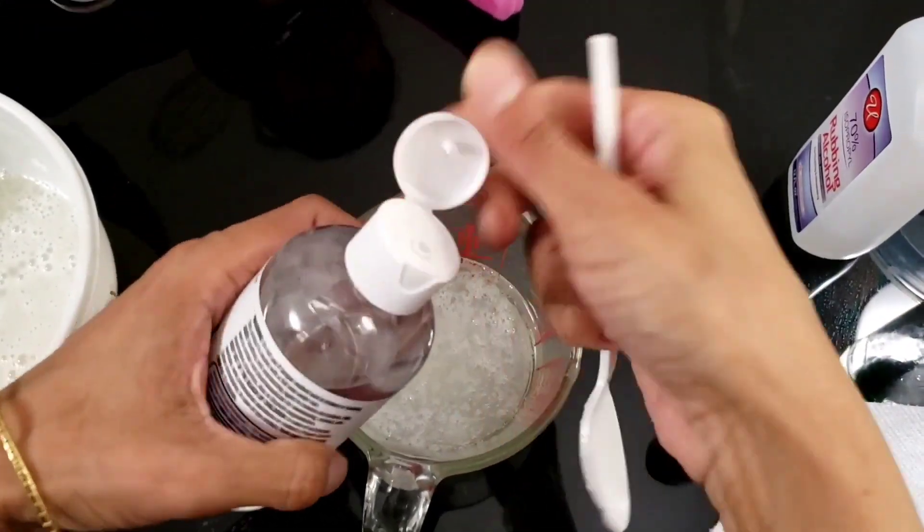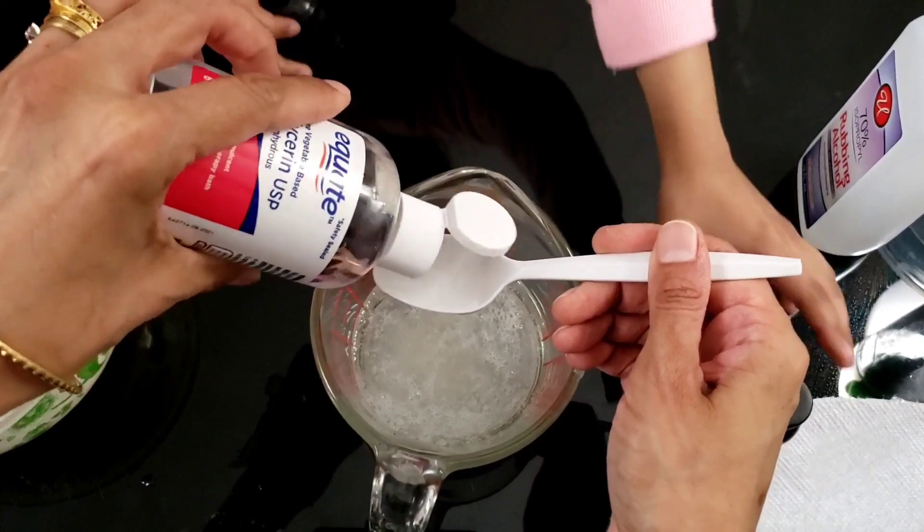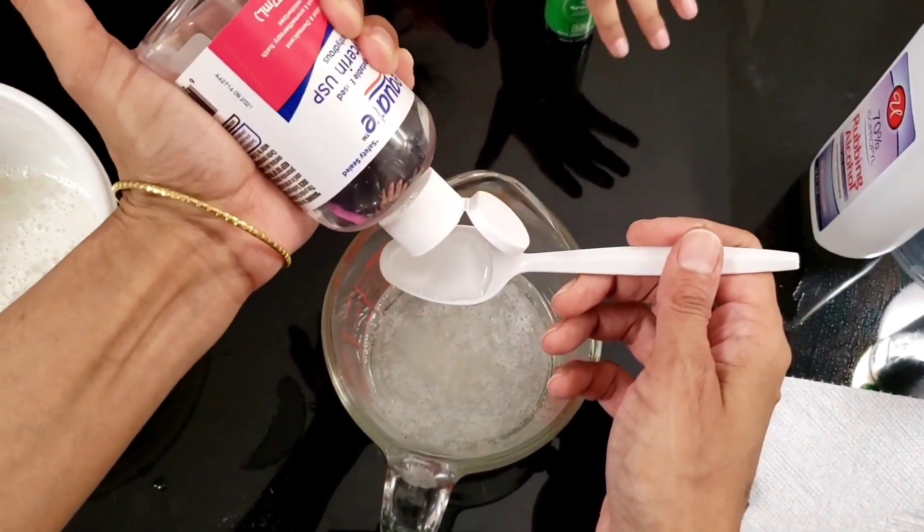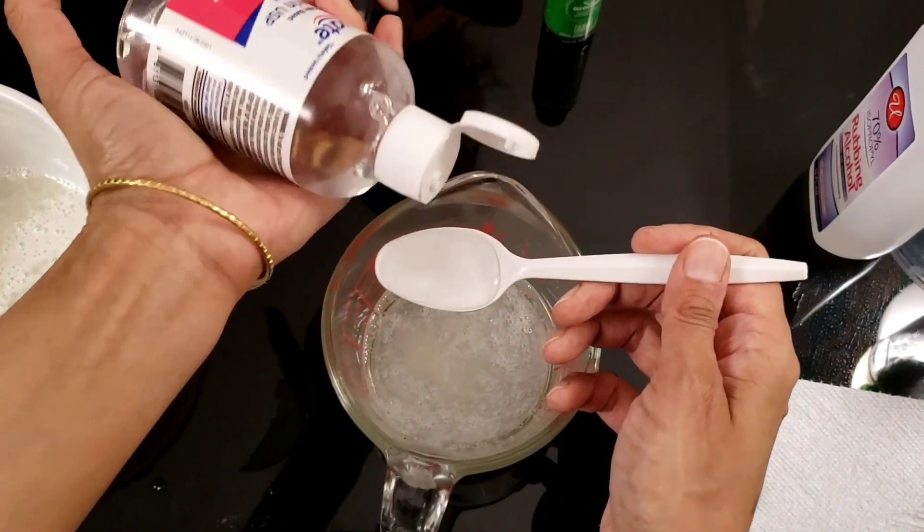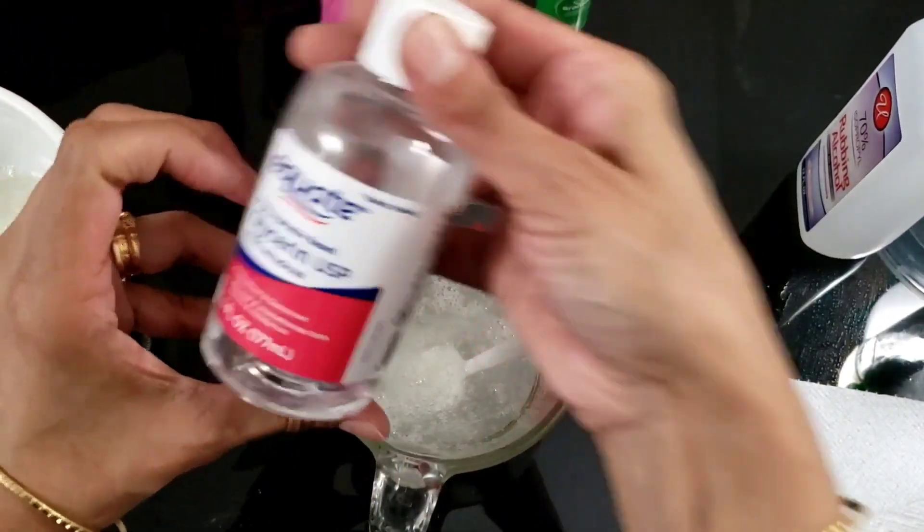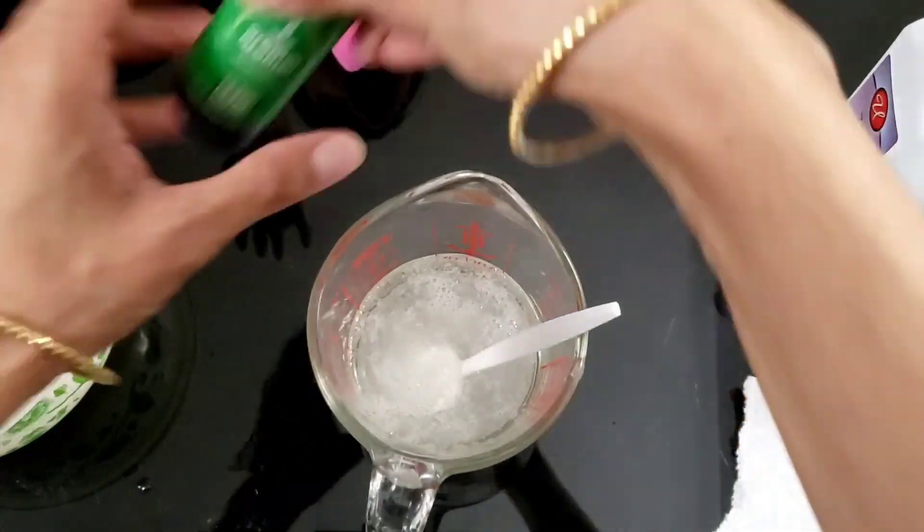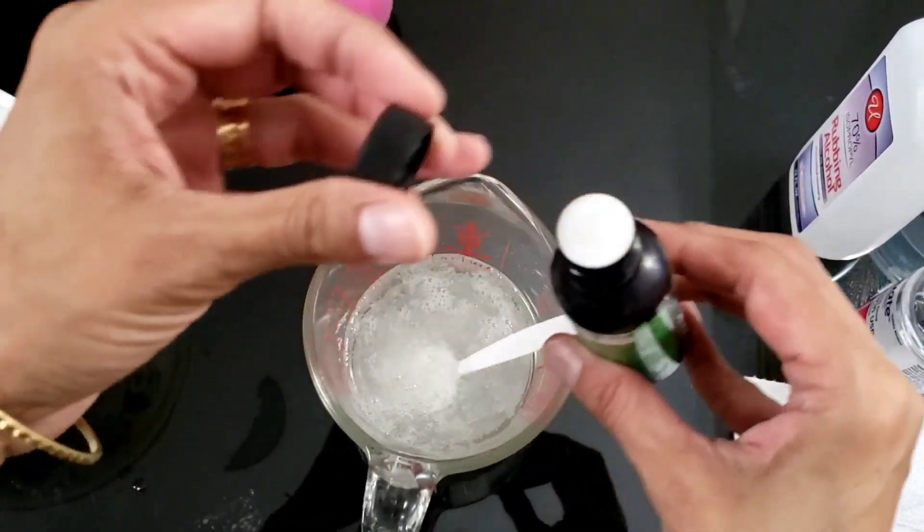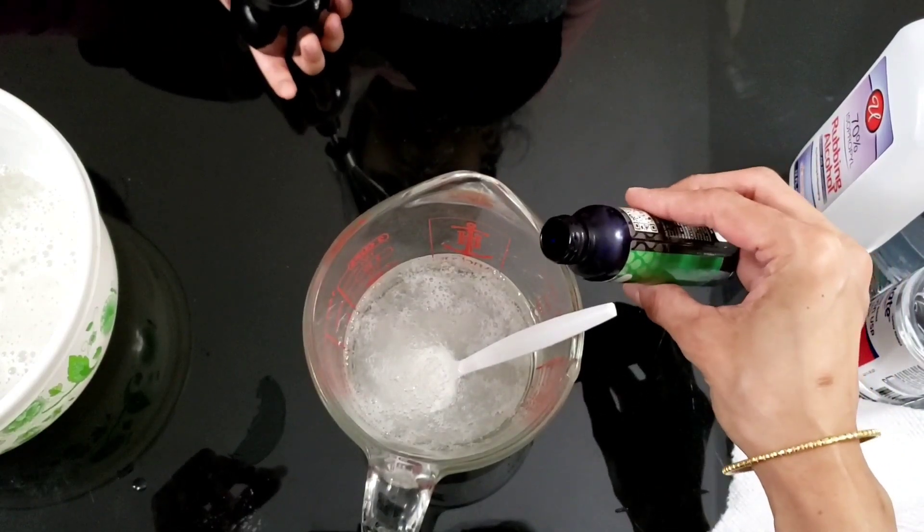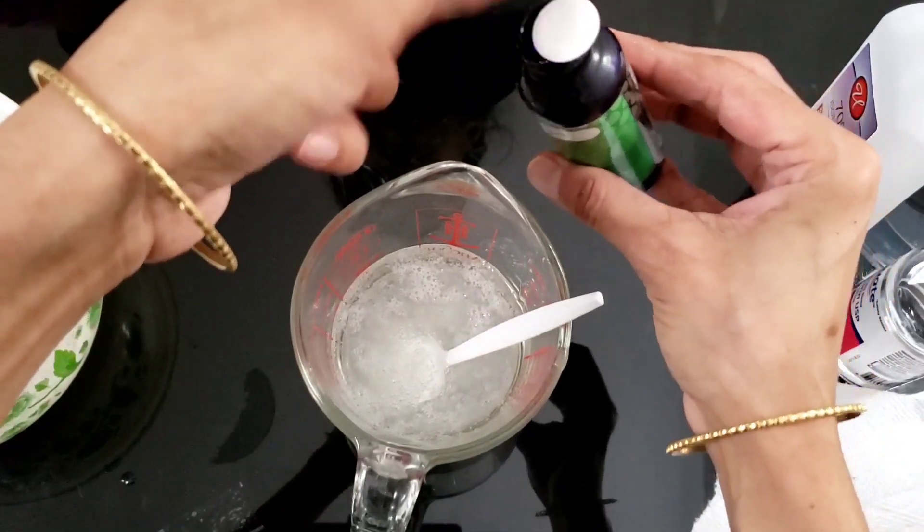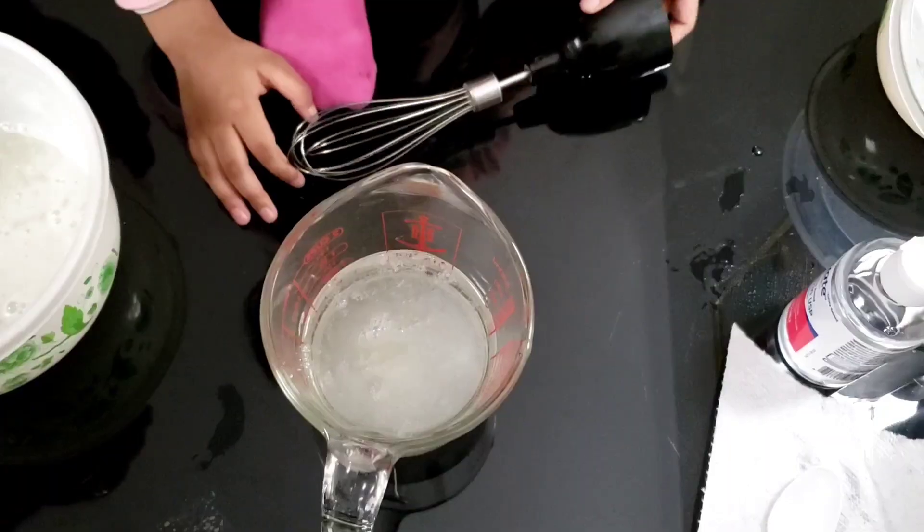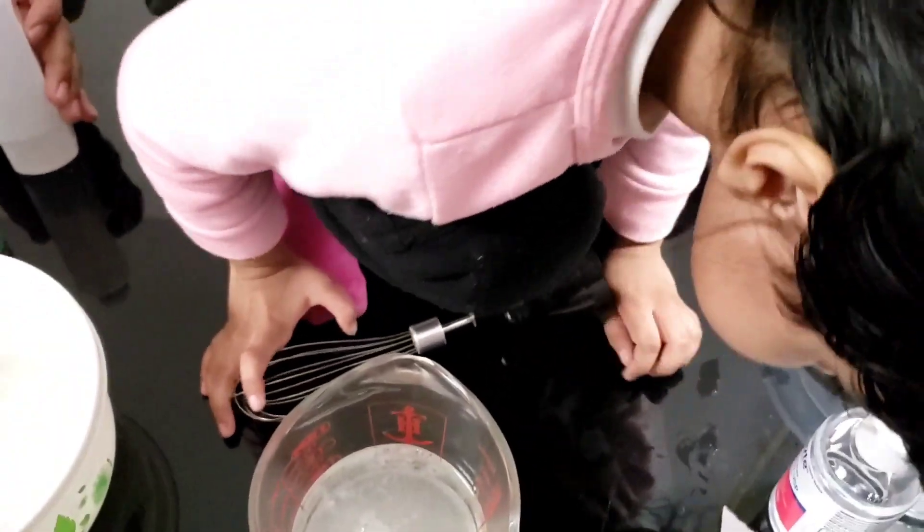This is optional - one teaspoon of glycerin. You can add a little more, but that's okay, regular glycerin. And drops of any essential oil you have. I'm adding jasmine, and I think I poured four or five, nearly six drops. So we're going to mix it.